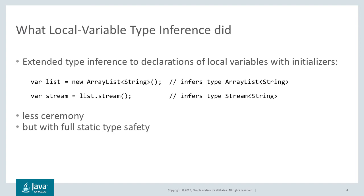Local Variable Type Inference extended type inference to the creation of local variables with initializers. As shown in the provided example, the compiler can infer the type of local variables from the initializer without additional information from the user. This leads to less ceremony but keeps Java's full static type safety.